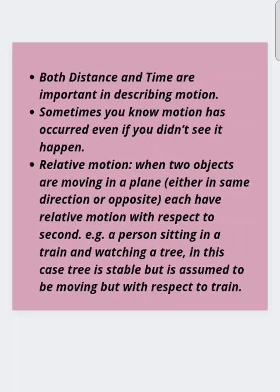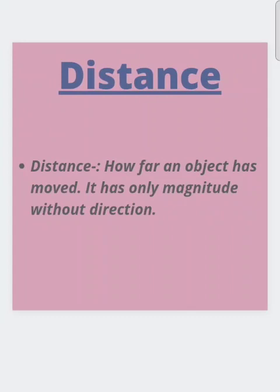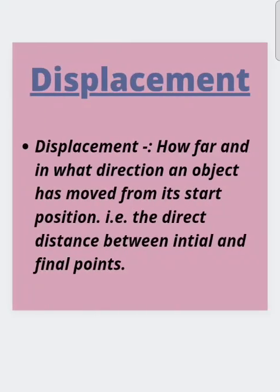For example, a person sitting in a train and watching a tree — the tree is stable but is assumed to be moving with respect to the train. The important term of motion is distance. Distance is how far an object has moved, and it has only magnitude without direction.